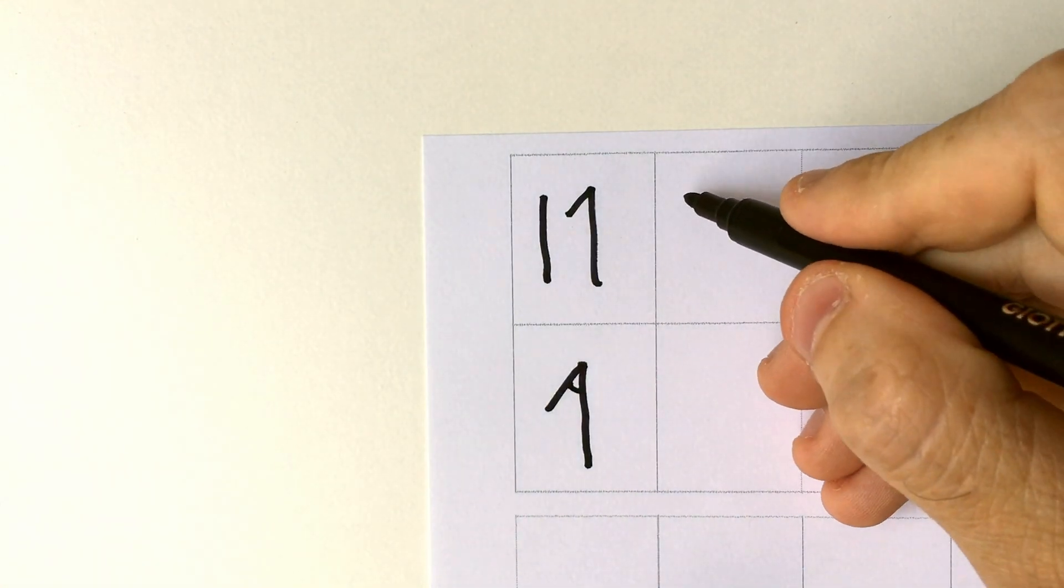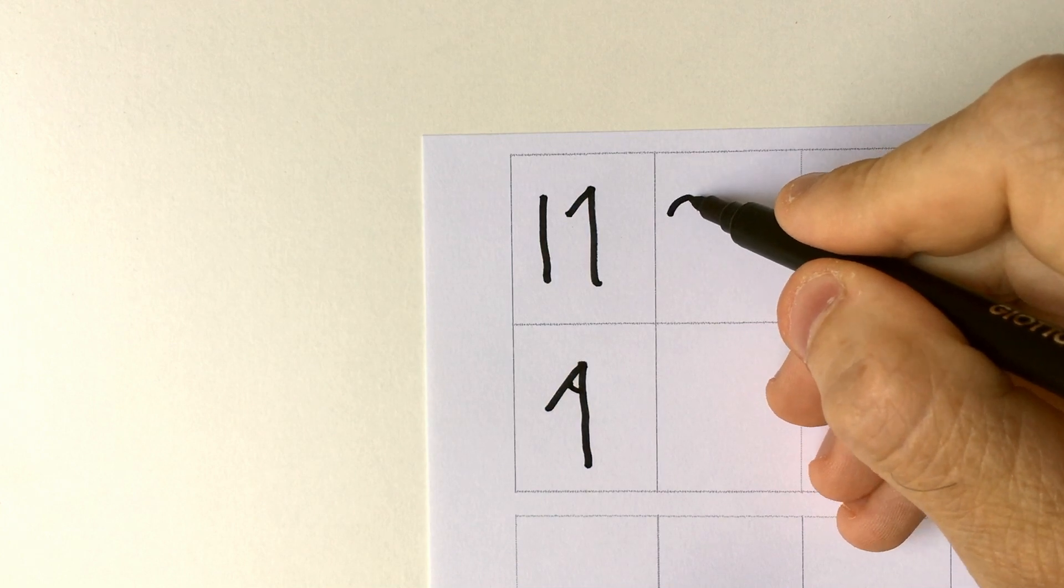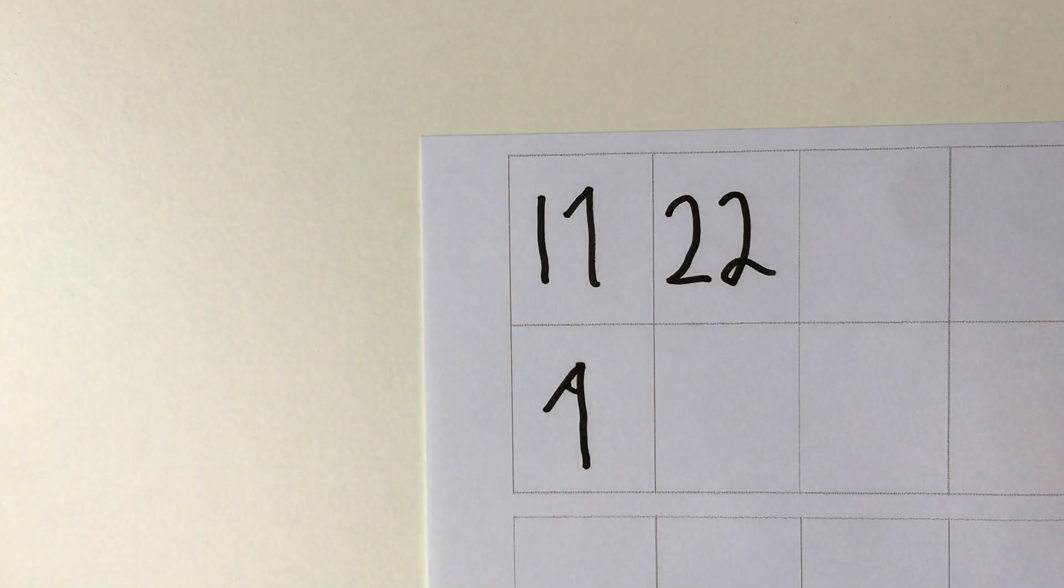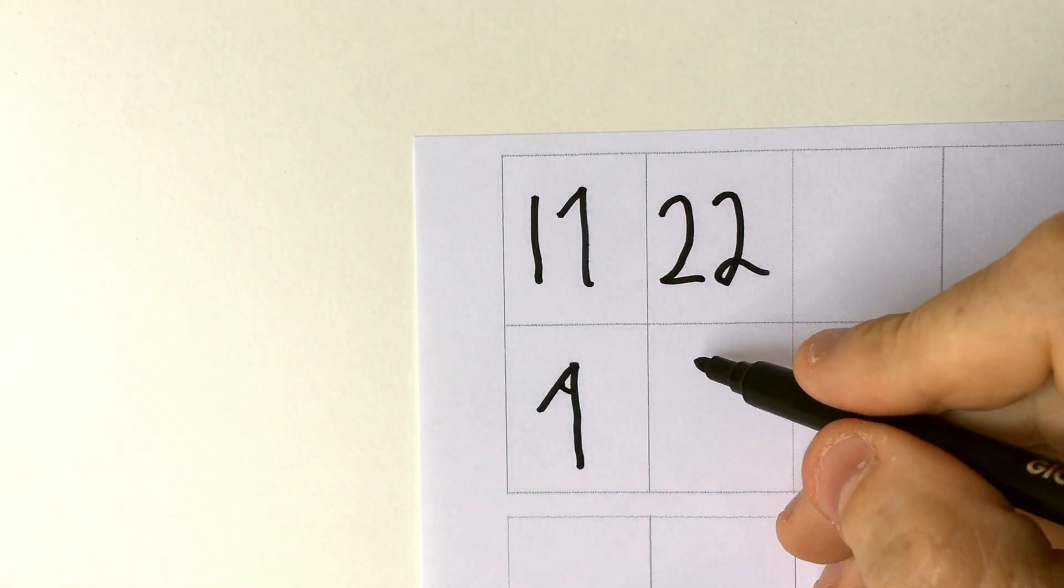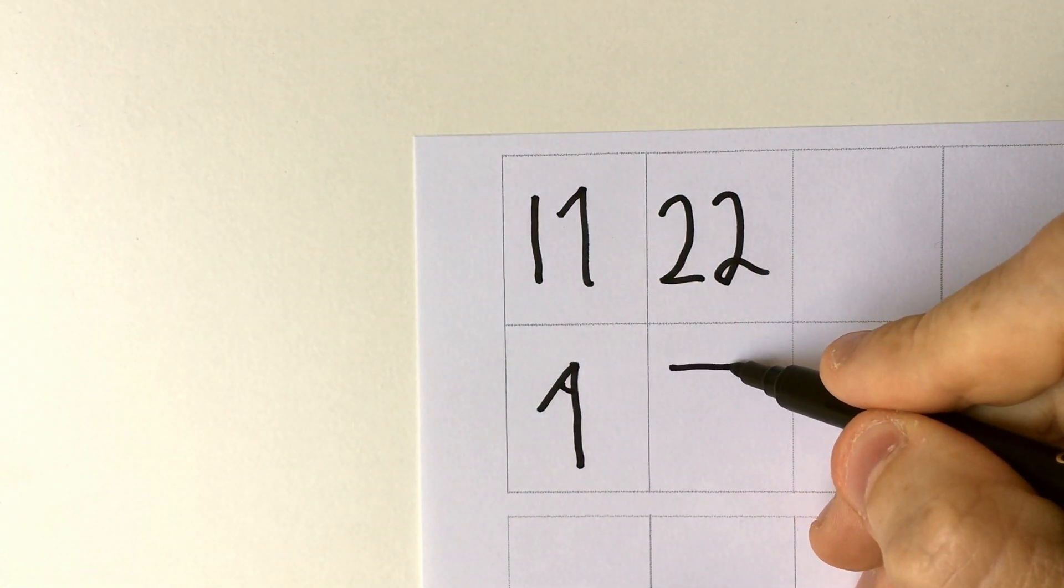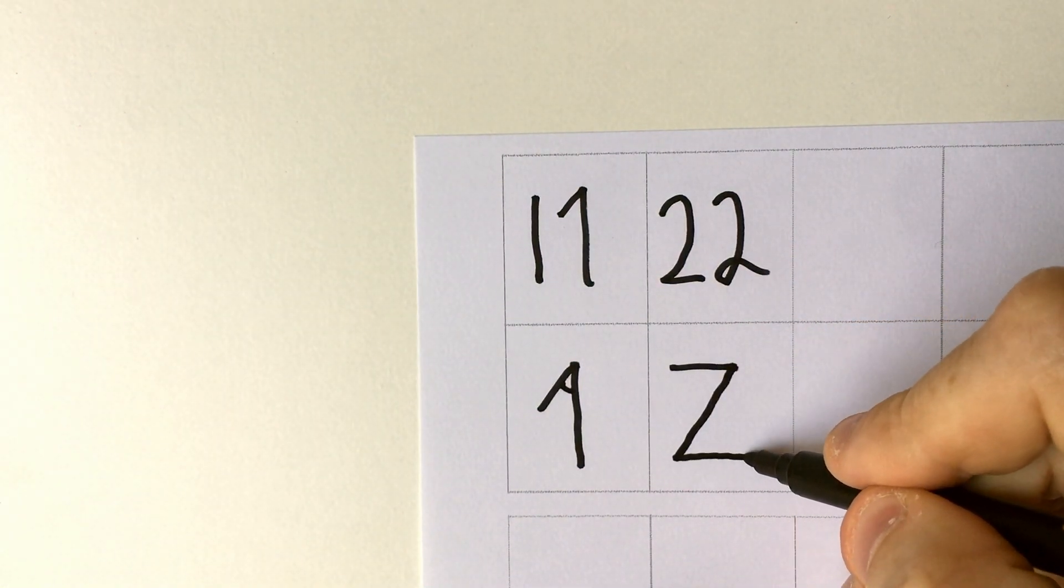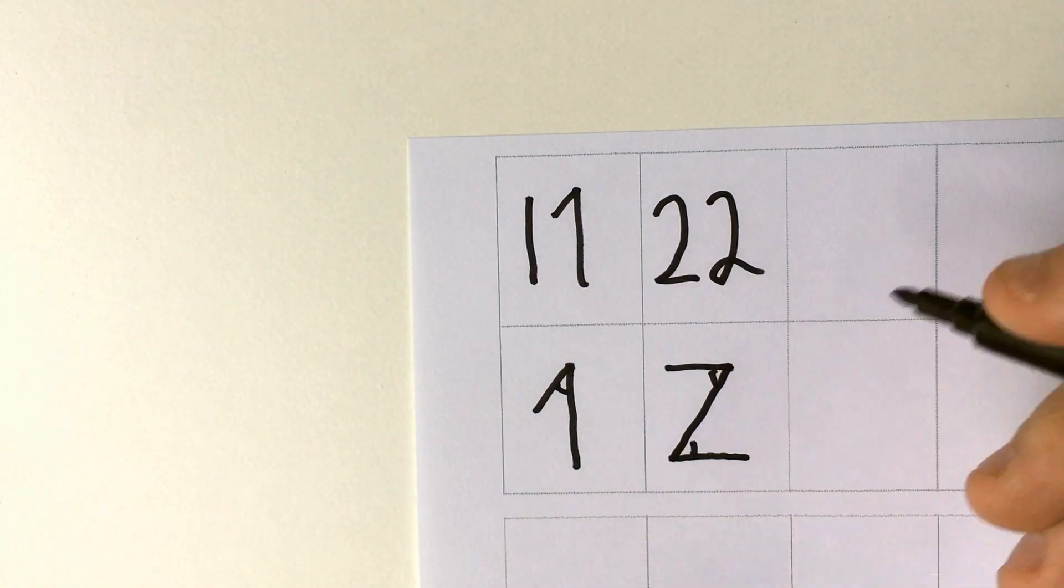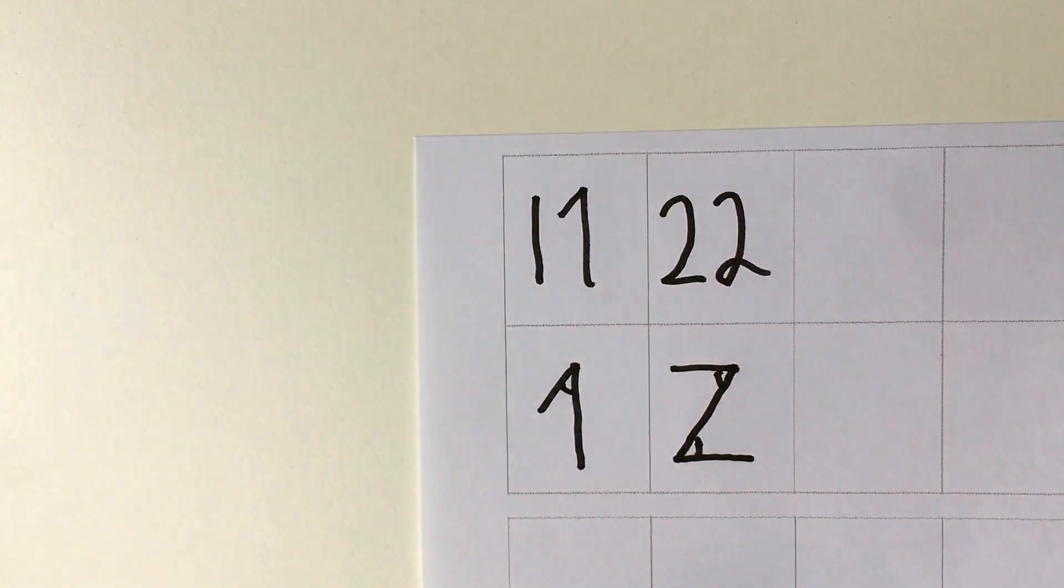Let's continue. Number two, something like this, or maybe with a curve depending where you're from. The number two takes on a geometric form like this. As you can see, there are one, two corners. Two corners for number two.